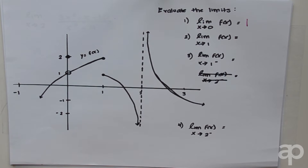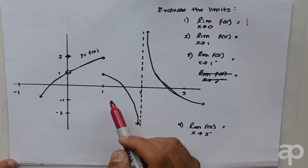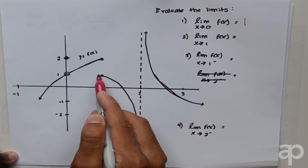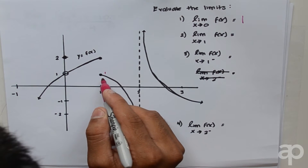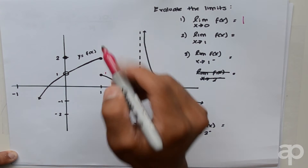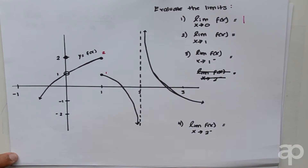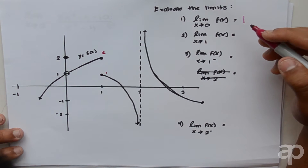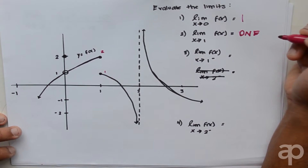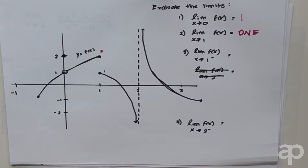The second problem asks us to evaluate the limit of f of x as x approaches 1. As we approach 1 from the right, the limit equals 1, but from the left it equals 2. Since the left limit and the right limit do not equal each other, the limit of f of x as x approaches 1 does not exist.